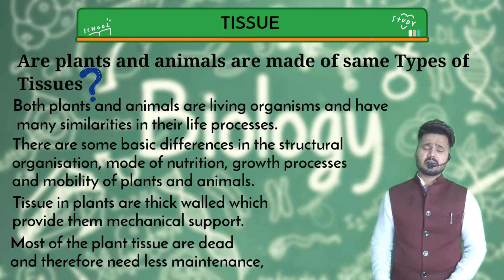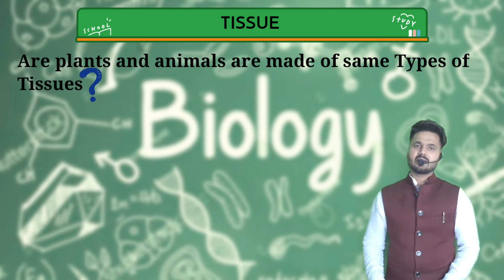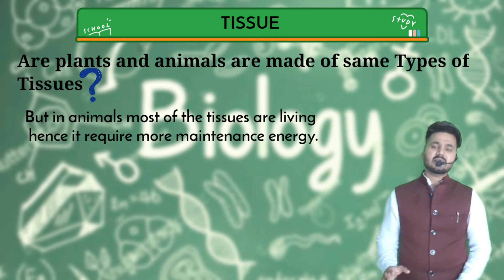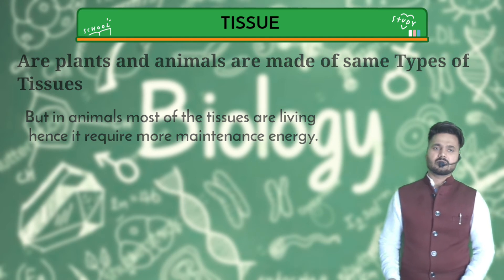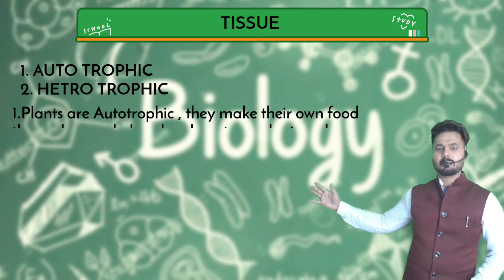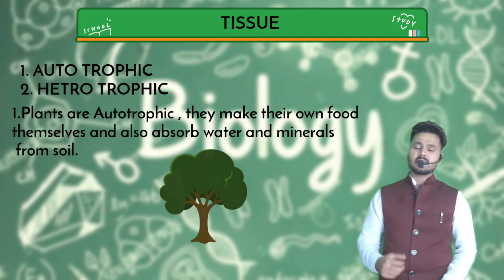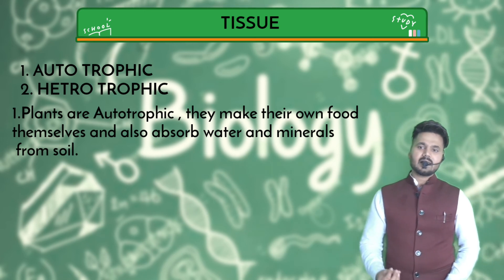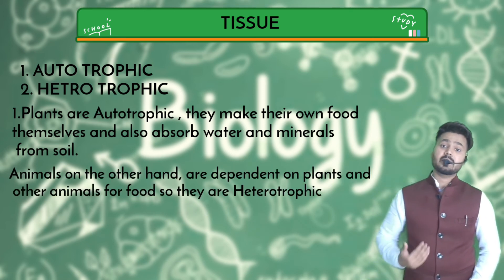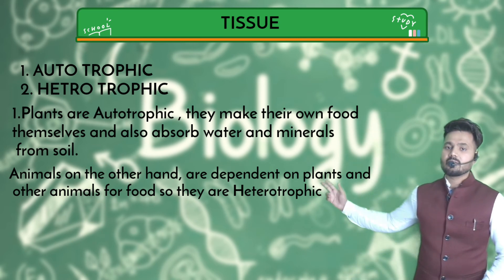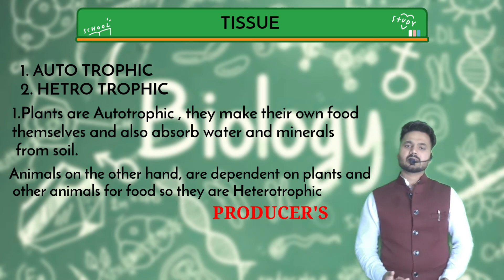In contrast, most animal tissues are living, so they require more maintenance and more energy. Organisms are divided into two types: autotrophs and heterotrophs. Autotrophs are organisms that synthesize their own food using raw materials like water and minerals from the soil. Heterotrophs depend on other organisms for food. Plants are known as producers, and heterotrophic organisms are known as consumers.